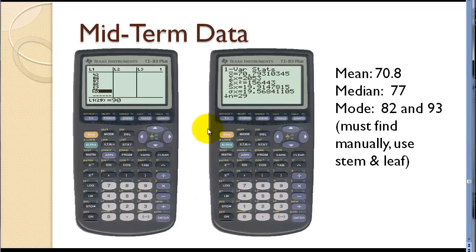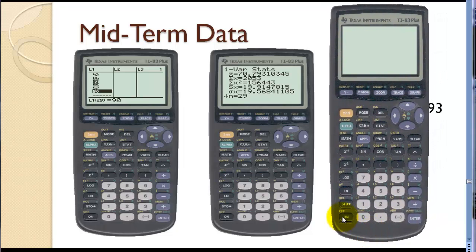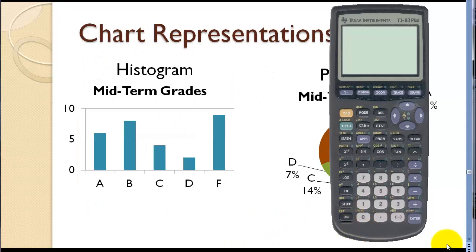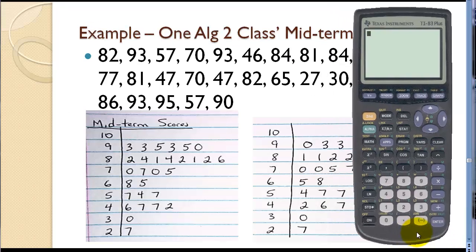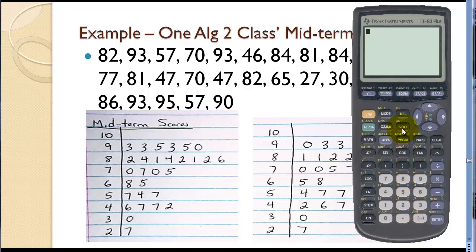Now we can use the graphing calculator to calculate all but the mode. Let me bring over the calculator. You've got some screen captures here, but let's look at how to do that. So this was our data. The first step is to press the stat button. We want to input our data, so press edit. And we want to enter our data into list one.